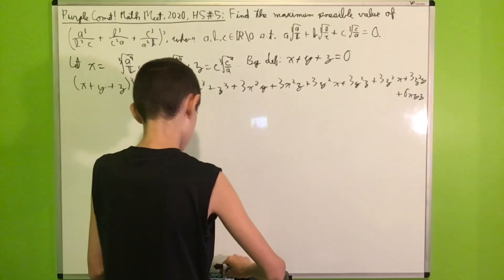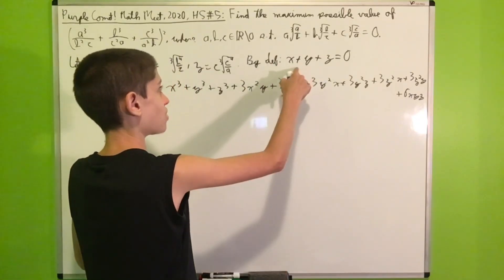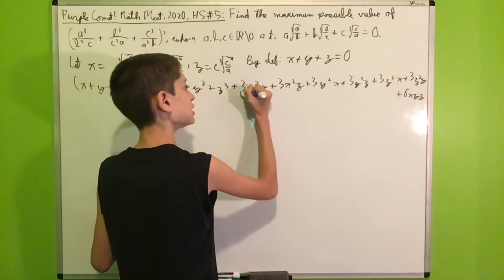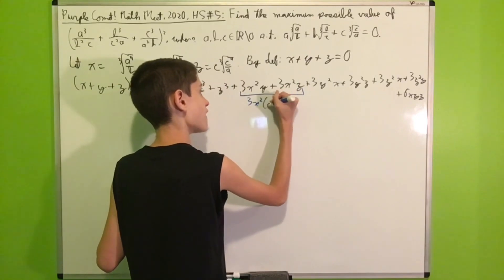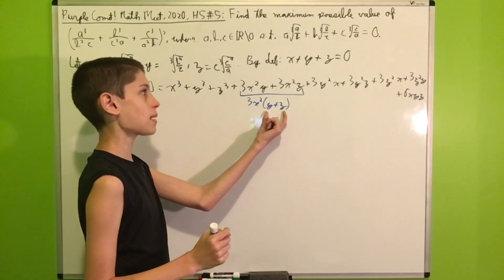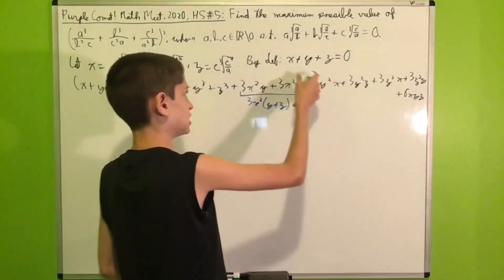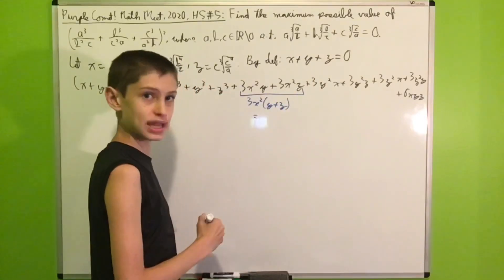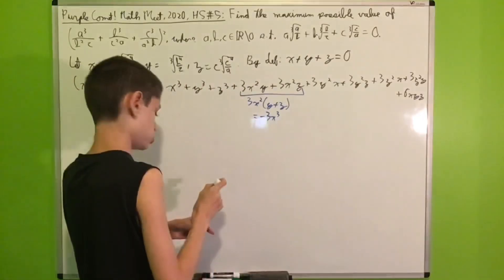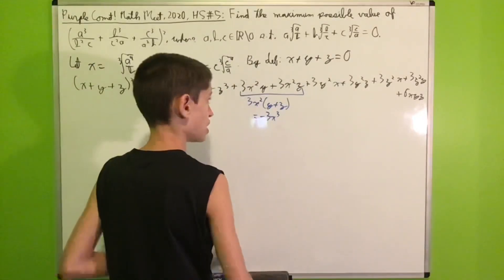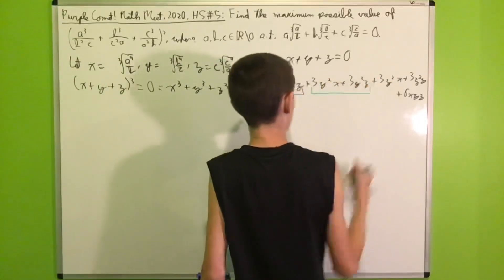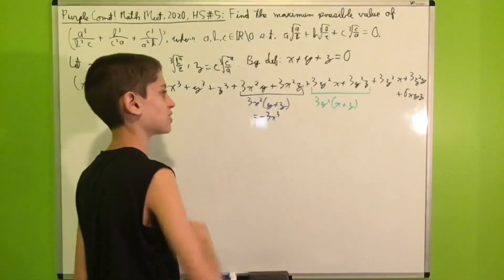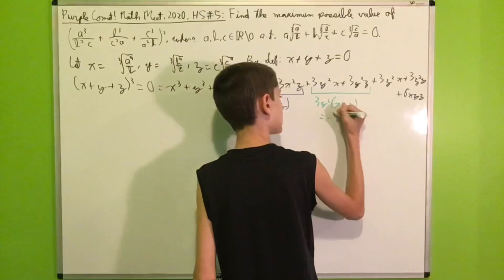We know x + y + z = 0, which is very useful. For the terms 3x²y + 3x²z, we factor out 3x² to get 3x²(y + z). Since y + z = −x, this becomes −3x³. Similarly, for 3y²x + 3y²z, we factor out 3y² to get 3y²(x + z) = −3y³.